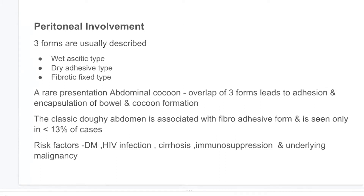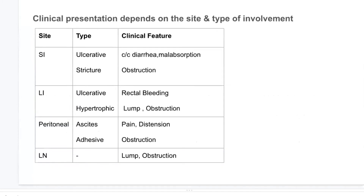Risk factors for abdominal tuberculosis include diabetes mellitus, HIV infection, cirrhosis, immunosuppression, and underlying malignancy. Clinical presentation depends upon the site and type of involvement. In the small intestine, predominant ulcerative lesions usually present with chronic diarrhea and features of malabsorption; stricture lesions usually present with features of intestinal obstruction.